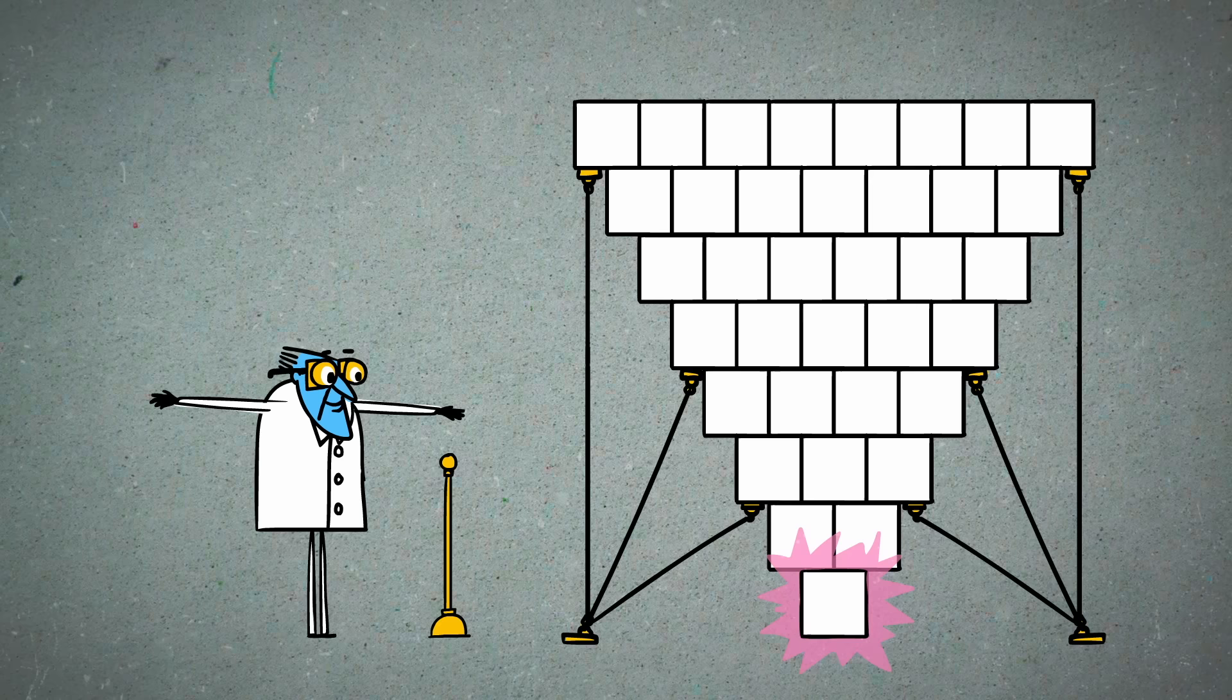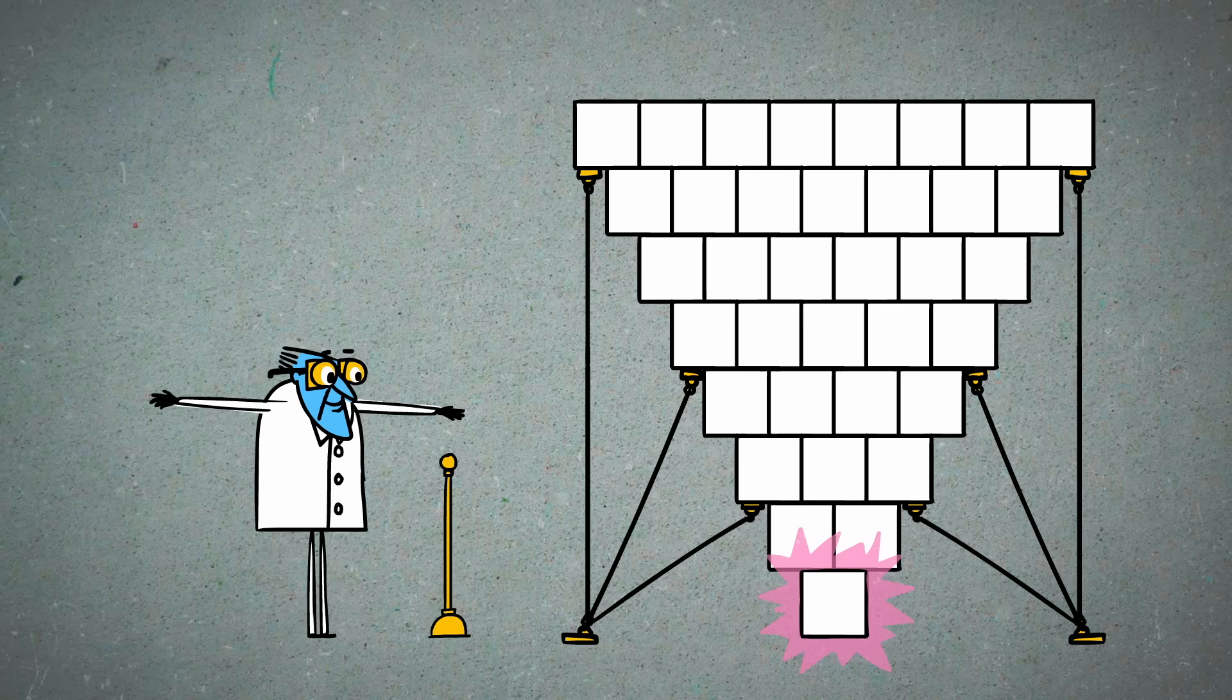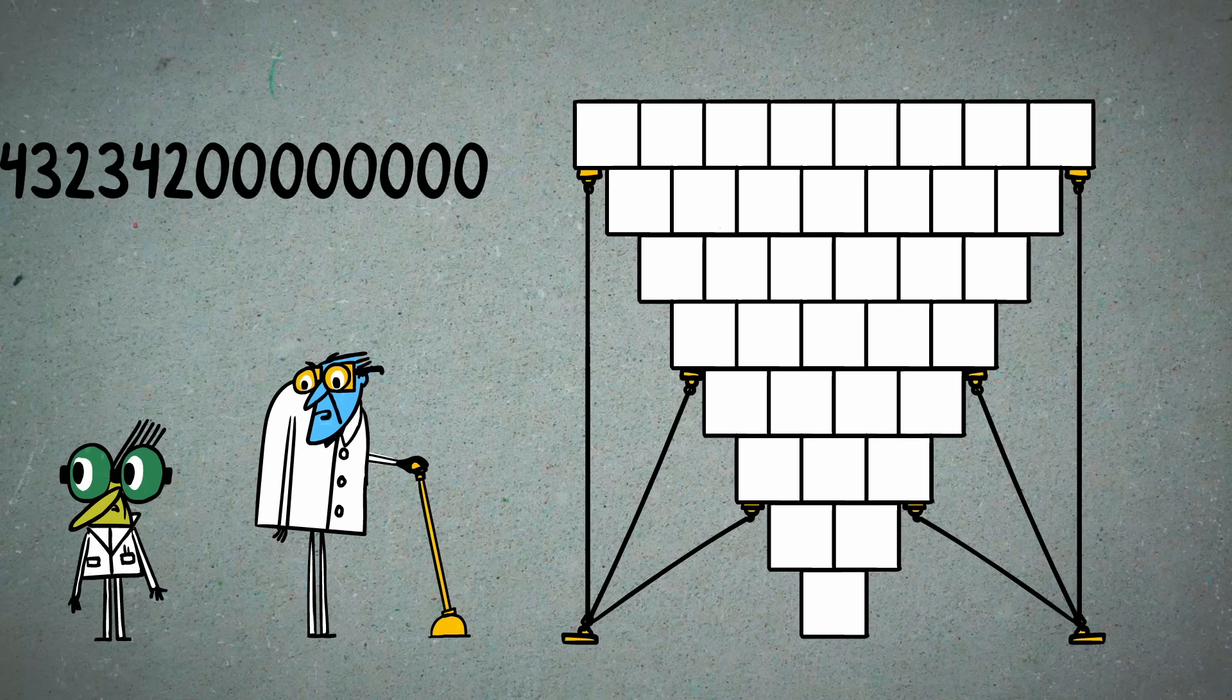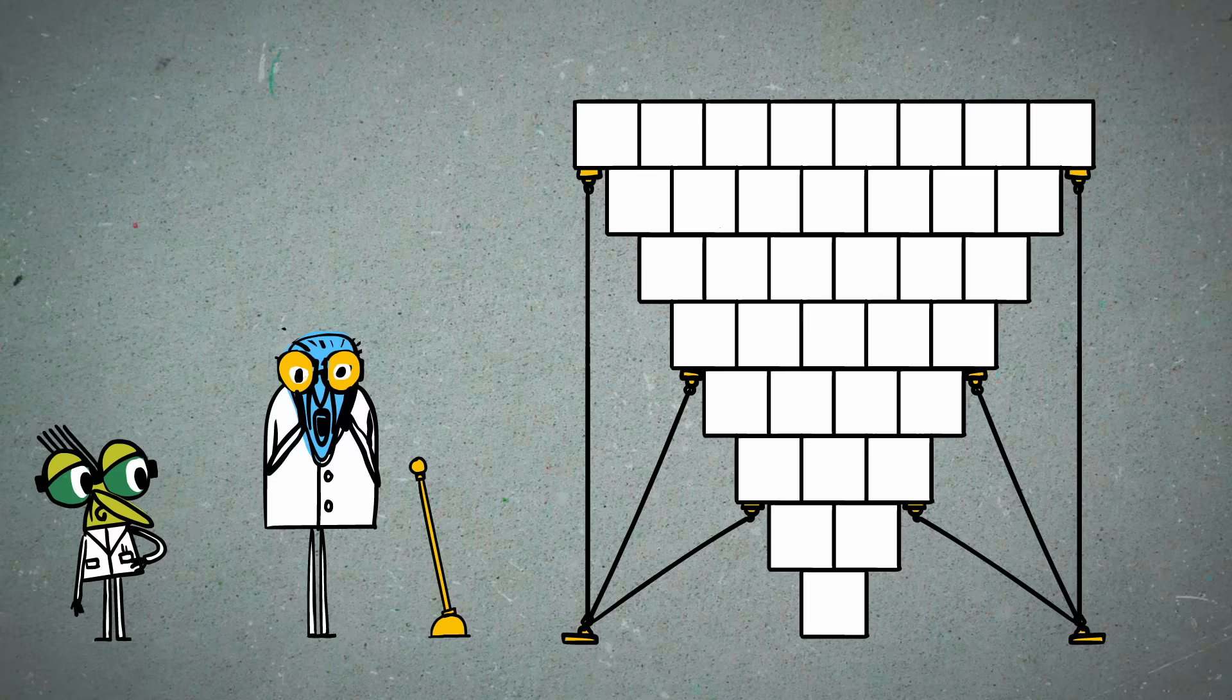But just as you pull the lever to start the experiment, your assistant runs in with terrible news. A rival lab has sabotaged your code so that all the zeros at the end of your results got cut off. That means you don't actually know if the bottom cell will be able to hold all the rabbits, and the reproduction is already underway.